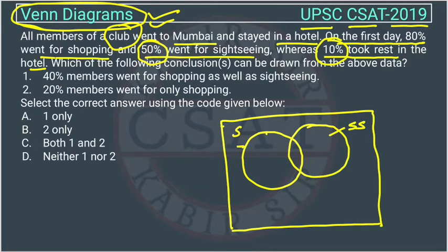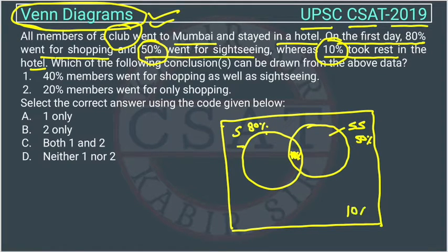80% are going for shopping and 50% are going for sightseeing. 10% took rest, so 10% will be outside both circles — they are not going for shopping or sightseeing. The total is 100%, and this 10% is placed outside the circles representing rest in the hotel.